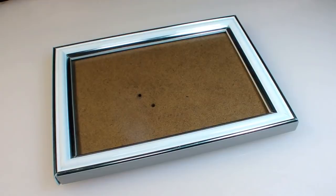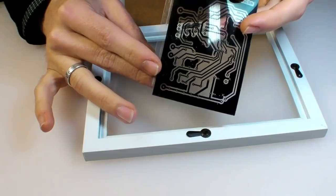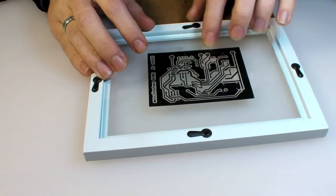You can buy specialized exposure frames, but a cheap photo frame really works quite well for keeping the transparency pressed against the board. The shiny or unprinted side should face the glass so that the ink can be as close as it can to the actual board. A small piece of tape will keep it from slipping around.